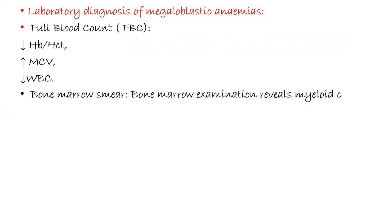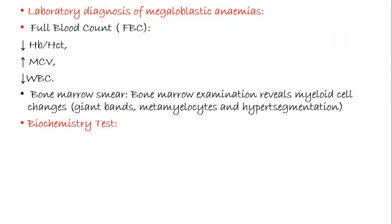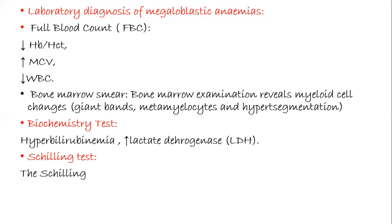Now we will see diagnostic tools which are used to determine if a person is suffering from megaloblastic anemia. Mostly it involves full blood count - that is complete blood count, FBC or CBC. If you go for CBC, there is decreased hemoglobin content, increased MCV because of the enlarged RBCs, and decreased number of WBC. Bone marrow smear shows myeloid cell changes, giant bands, metamyelocytes, and hypersegmentation. Biochemistry test involves hyperbilirubinemia and increased lactate dehydrogenase.